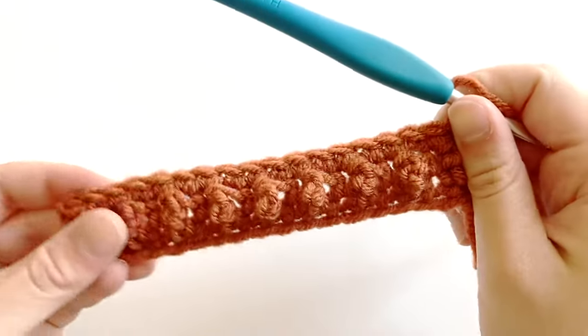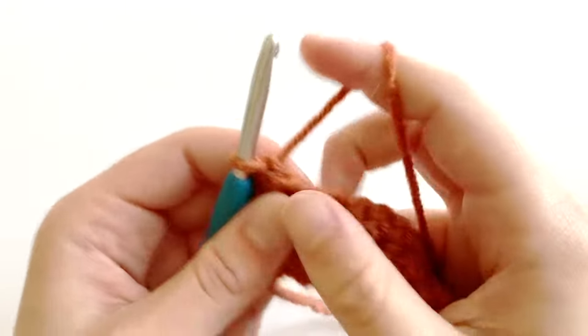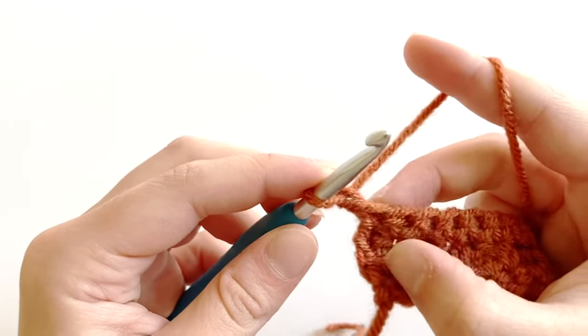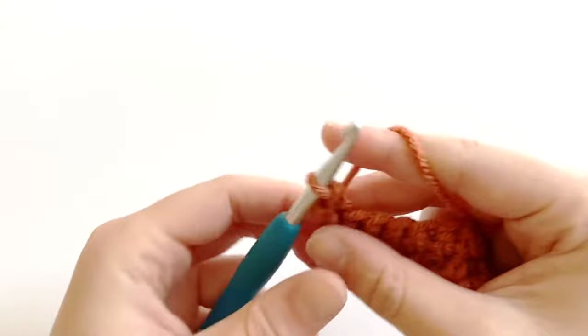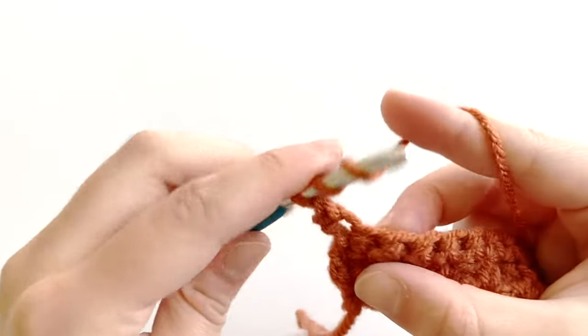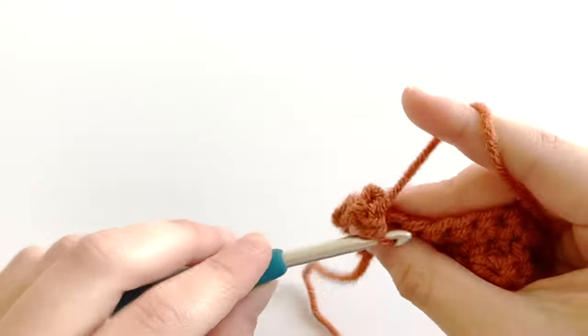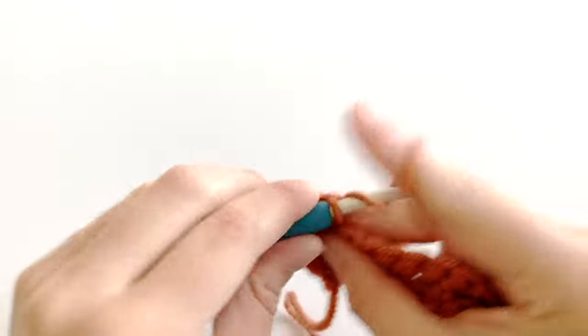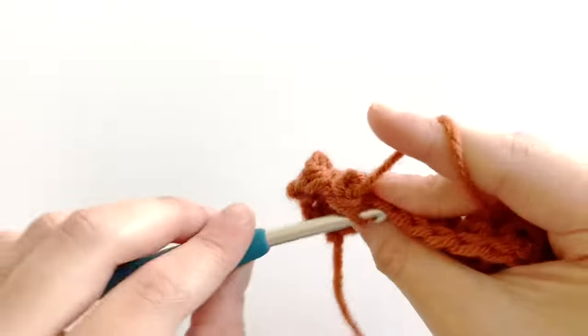Okay, so I've reached the end of row three. So now chain one and turn, and this time we're going to work one single crochet into that first stitch and then one triple crochet into the second stitch. And again, we're going to want to continue alternating between one single crochet and one triple crochet until we've reached the end of the row.